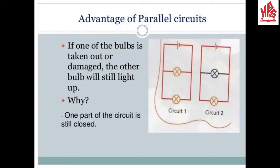Both parallel and series circuits have some advantages and some disadvantages. The biggest advantage of a parallel circuit is that if one of the two bulbs is taken out or damaged, the other bulb will still light up. This is because one part of the circuit is still closed, since parallel circuits have more than one path for the flow of electric current.